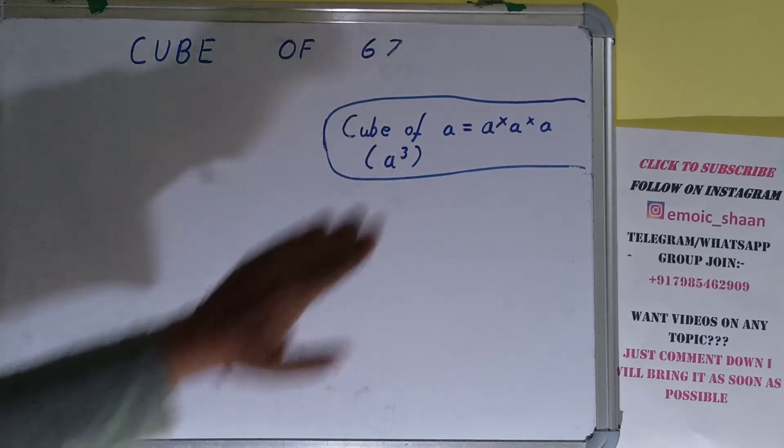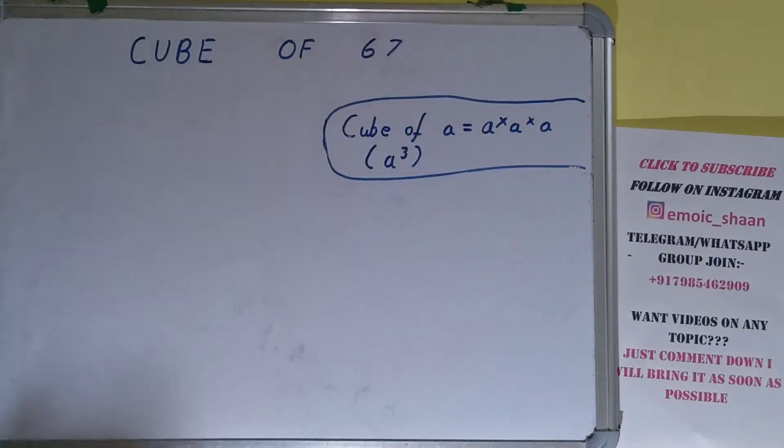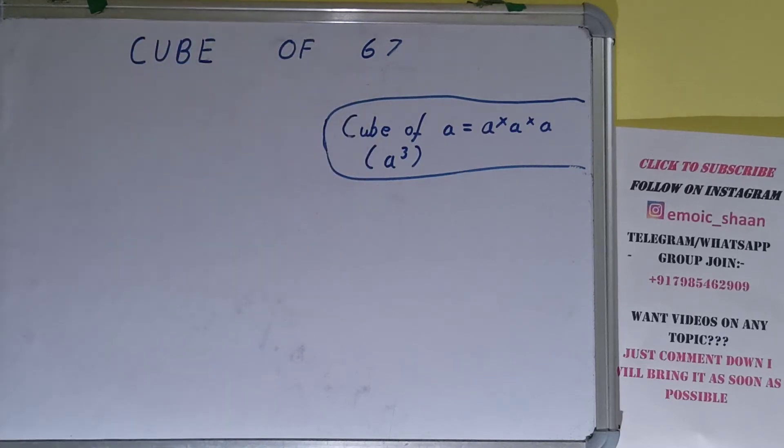find the cube of a, where a is any integer. For that, you need to do a × a × a. That is how you can get the cube of a. One more thing, cube of a can also be written as a³. So that was the general formula. Now moving on to our question, we need the cube